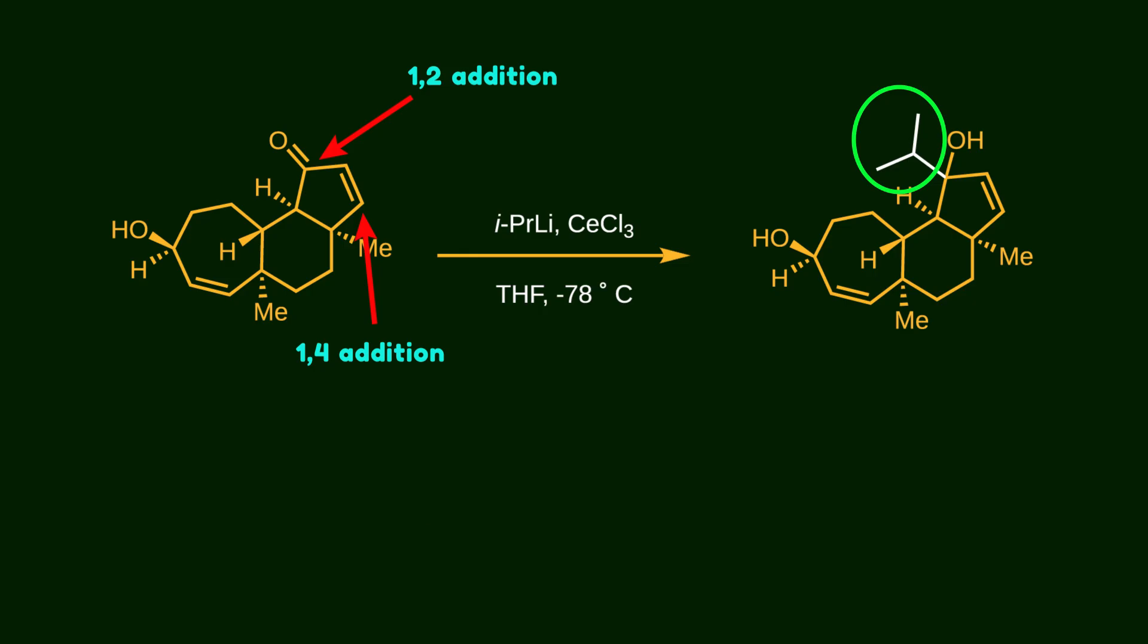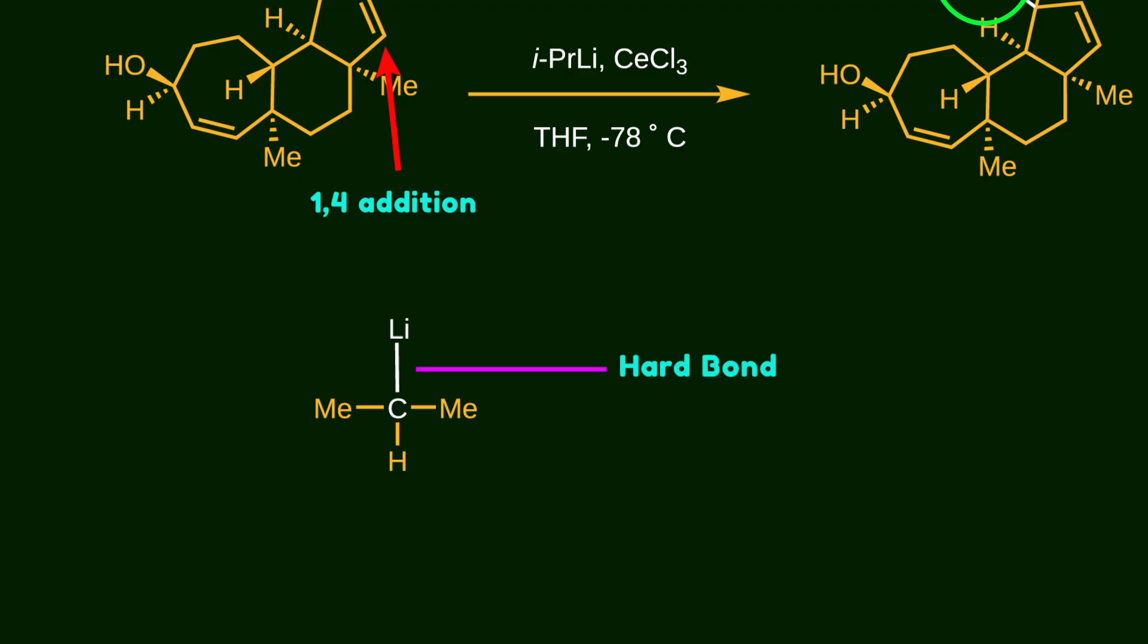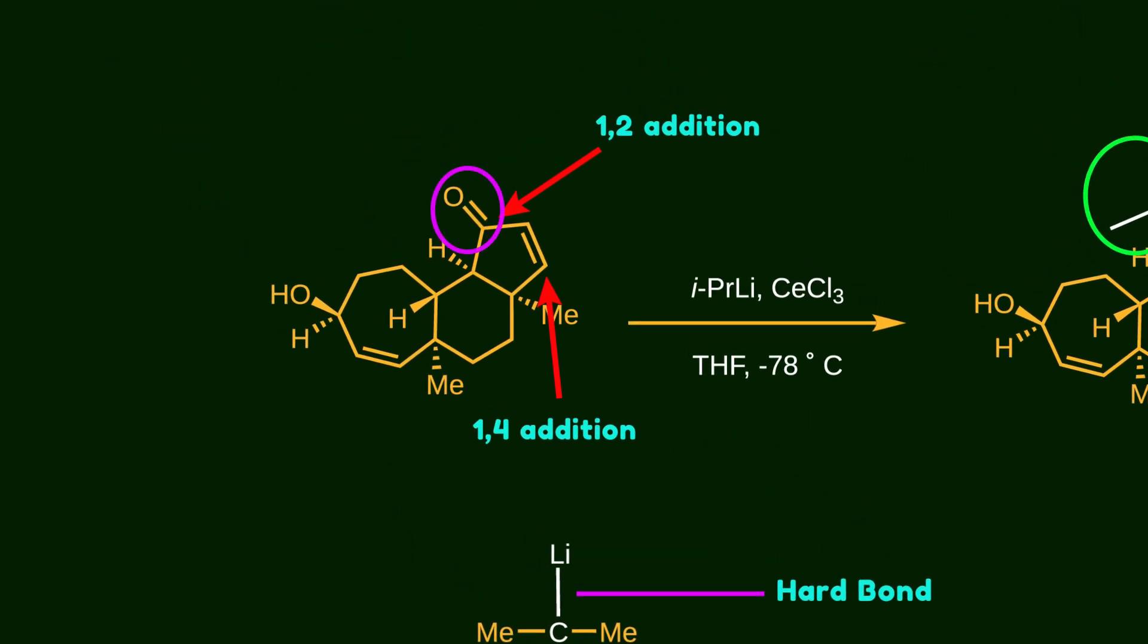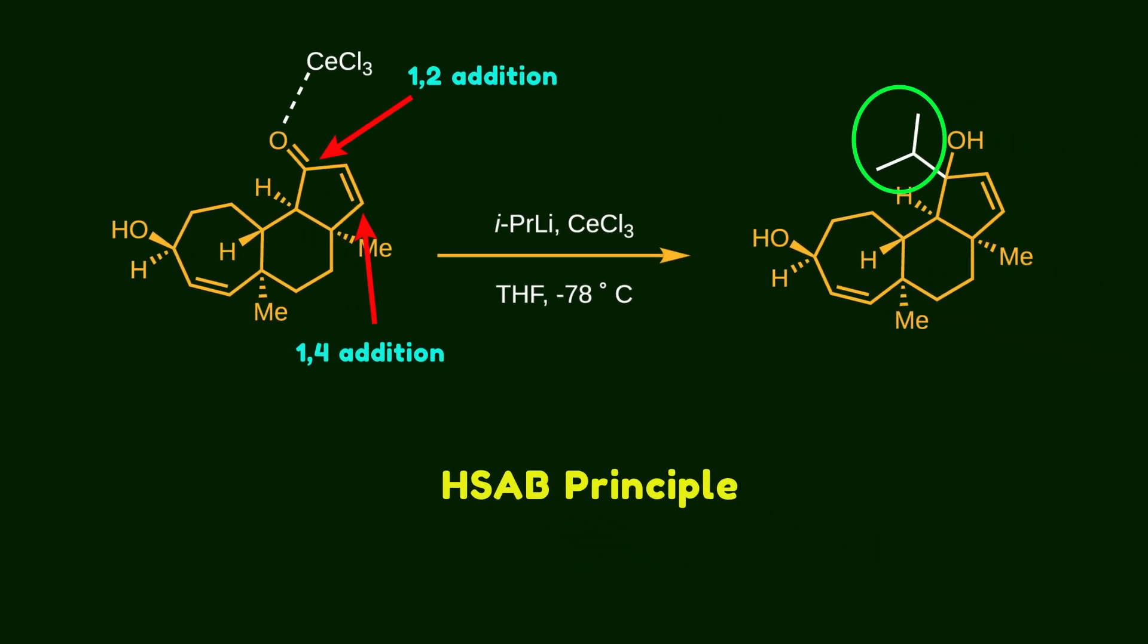Why? Because the lithium-carbon is considered a hard metal-carbon bond due to lithium's high electropositivity. Similarly, the carbon-oxygen double bond is also classified as hard, thanks to the large electronegativity differences between carbon and oxygen. Additionally, the presence of cerium chloride enhances the electrophilicity of the carbonyl carbon by coordinating to the oxygen atom. Based on the hard-hard and soft-soft interaction principle, this favors 1,2-addition over 1,4-addition.